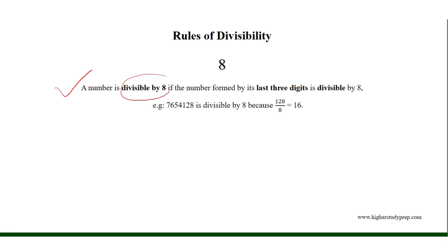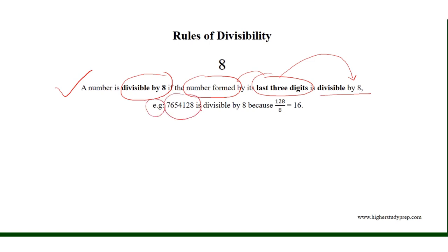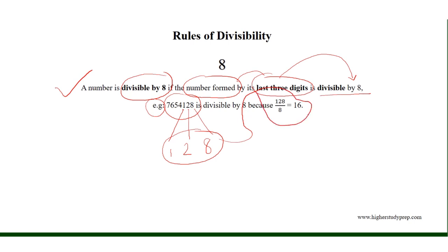A number is divisible by 8 if the number formed by its last three digits is divisible by 8. For example, in the given number, the last three digits are 1, 2, and 8, and the number formed by them is 128, which is divisible by 8 because 128 divided by 8 is equal to 16. Therefore, the number is divisible by 8 and the division results in 956766.